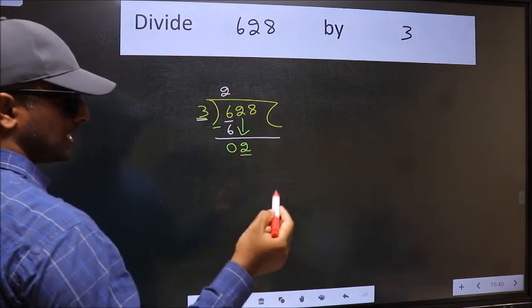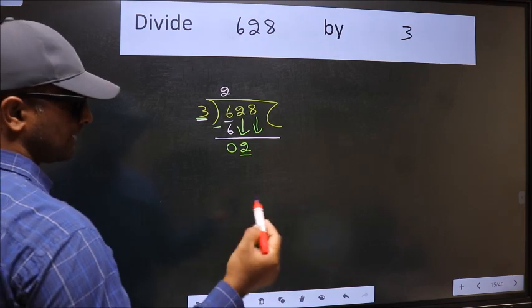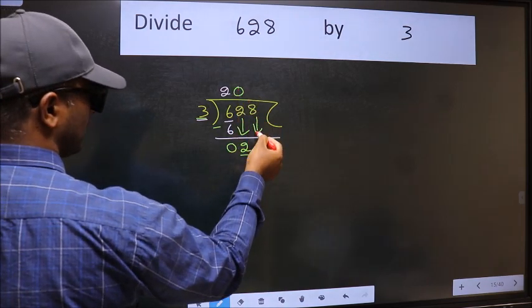So we should bring down the second number. And the rule to bring down second number is we should put 0 here. Then only we can bring down this number.